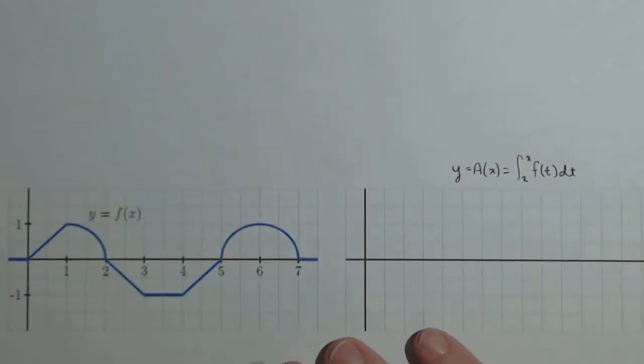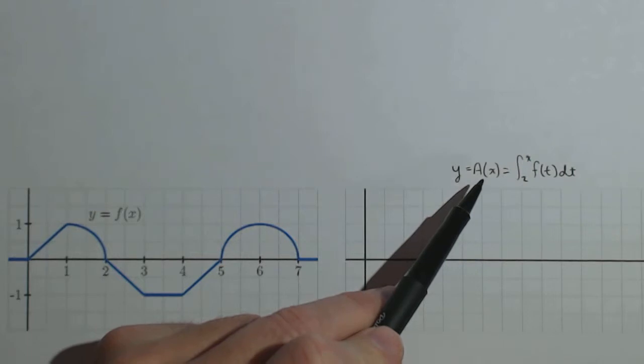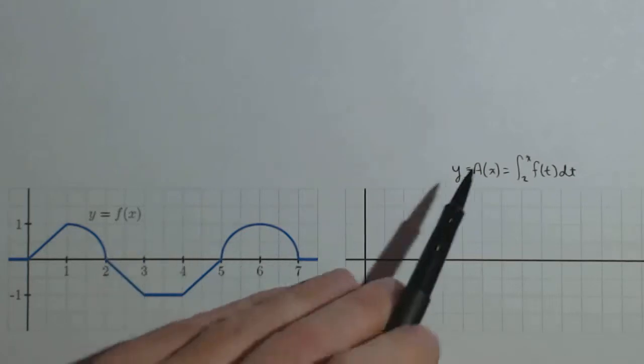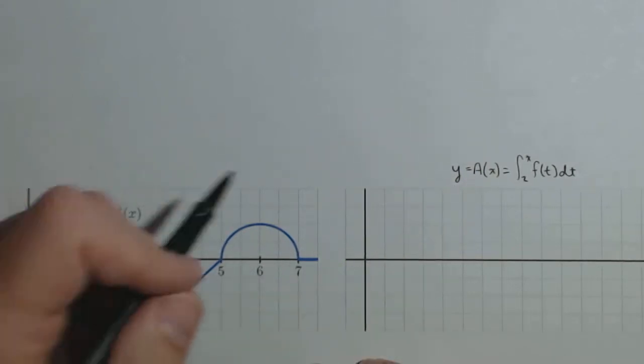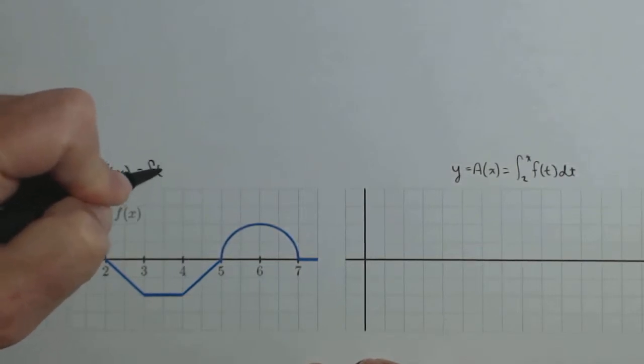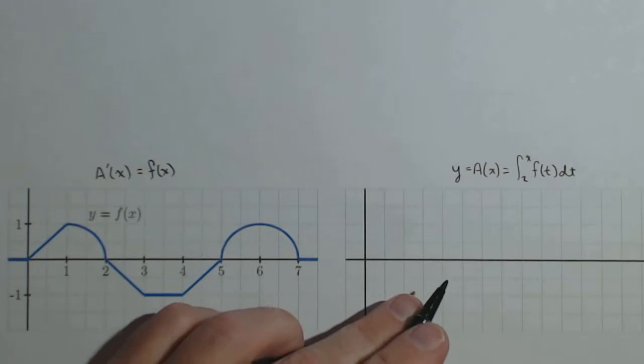In activity 5.4, we're going to be sketching the graph of a(x) based on what we know about f(x). Right off the bat, part a asks what's the relationship between a(x) and f(x). Well, by the second fundamental theorem of calculus, we know that a prime of x is f(x). This is the derivative of this function.